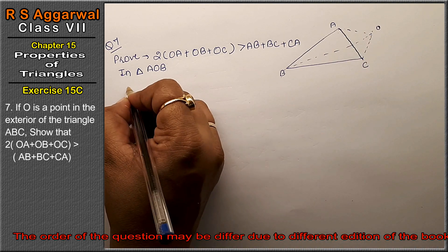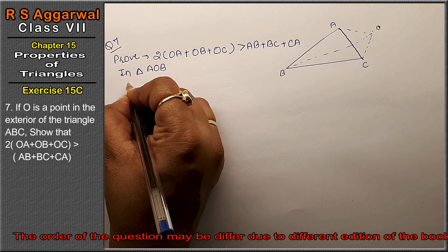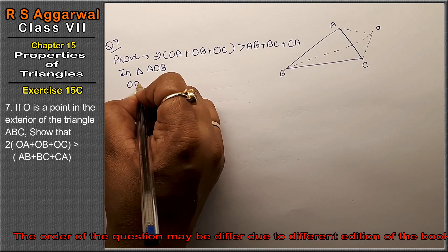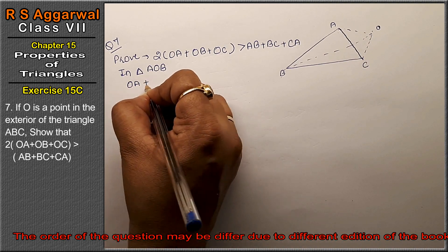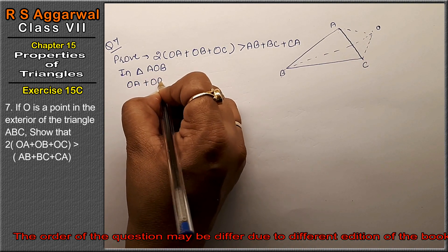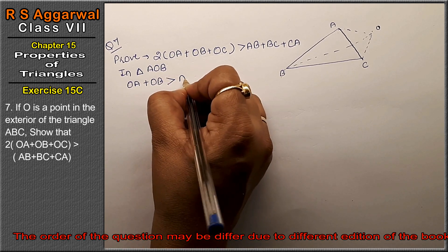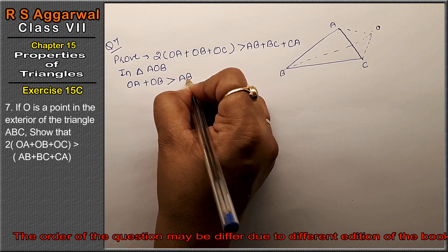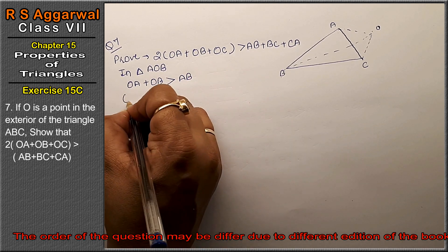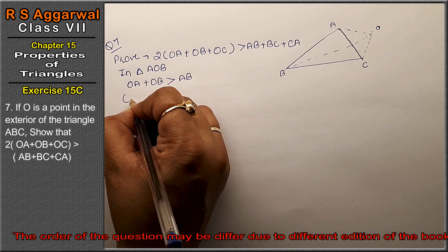In triangle AOB: OA plus OB is greater than AB. The reason is the sum of two sides is greater than the third side. This is our first equation.